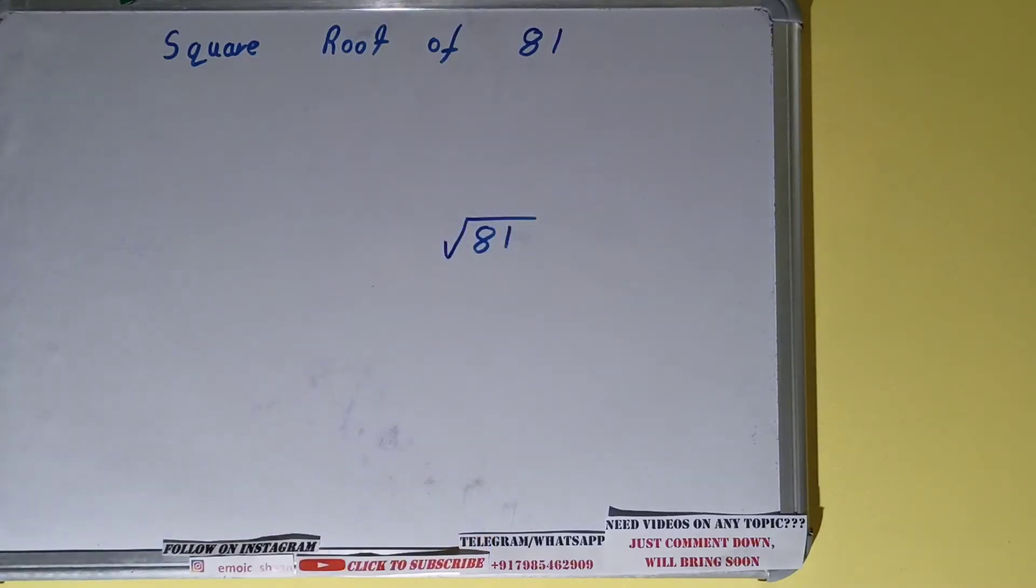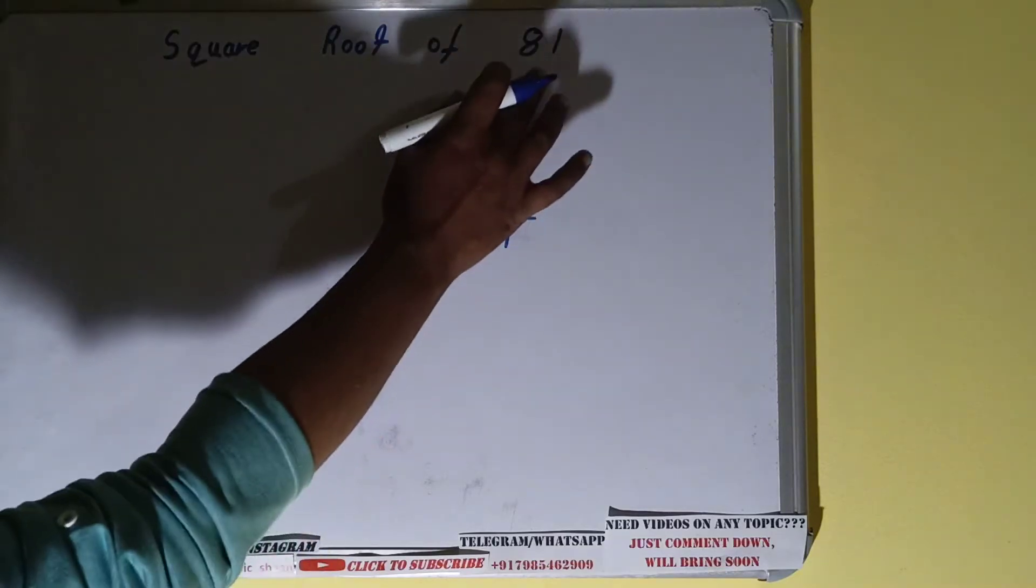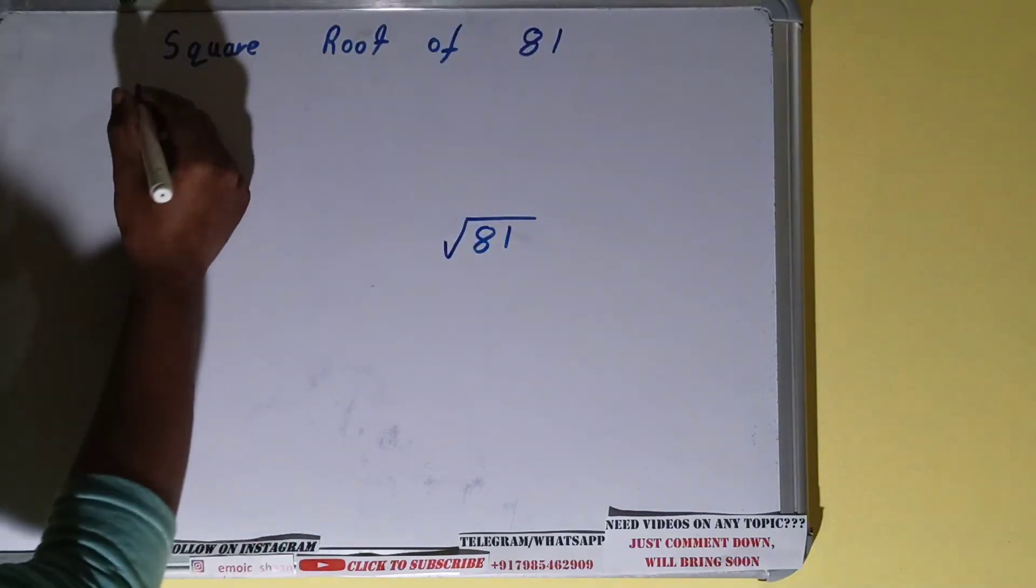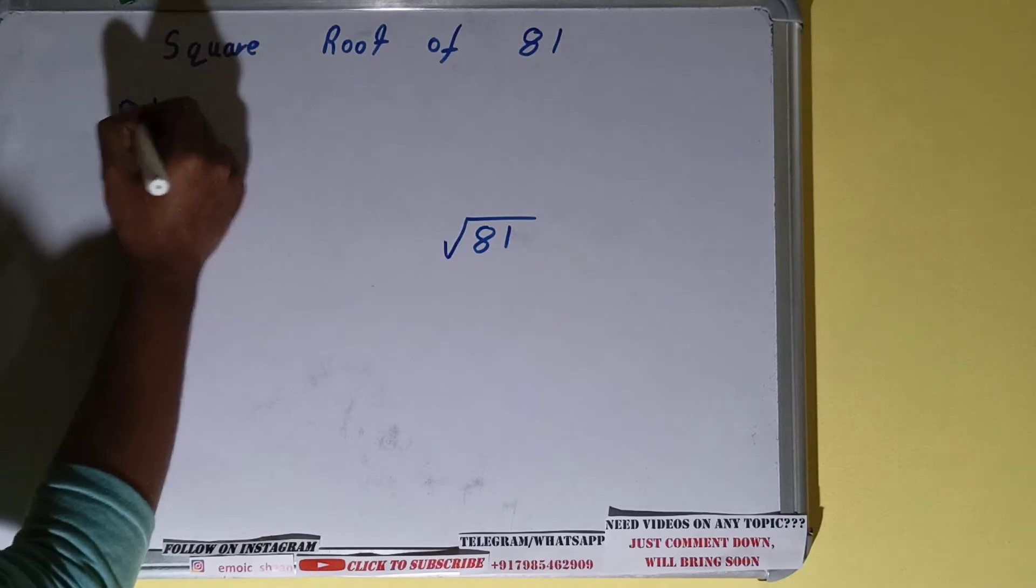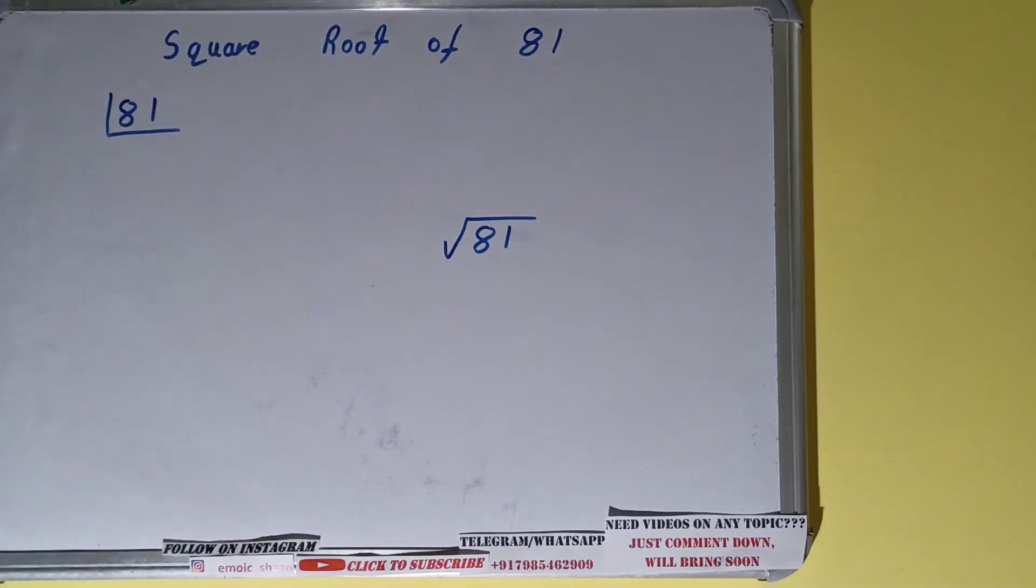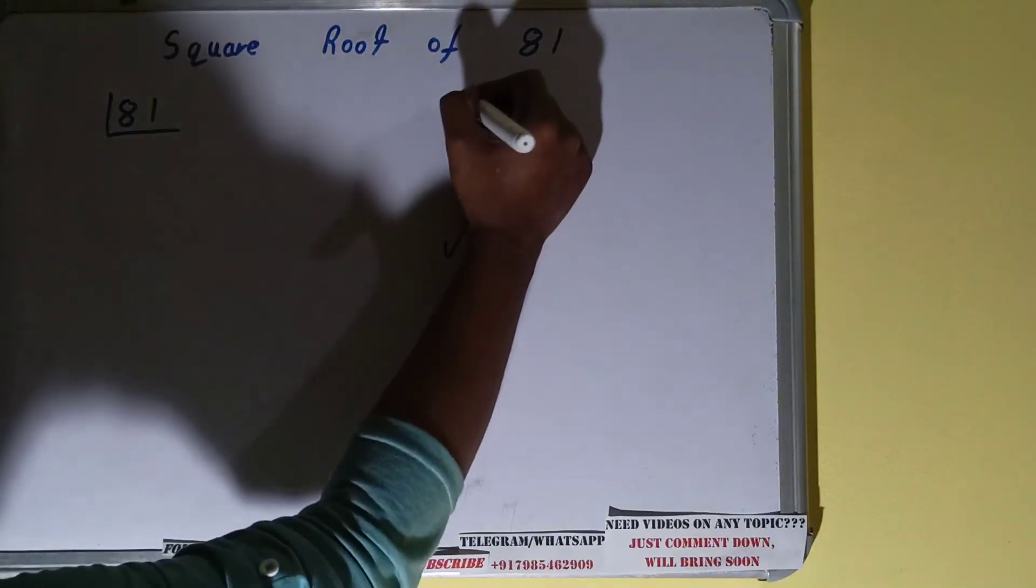Square root of 81. As I told you, we'll be using the prime factorization method, that means we need to do the prime factorization of the number. For doing the prime factorization, you should be knowing what are prime numbers. Prime numbers are numbers that are divisible by one and the number itself, like two, three, five, seven, and so on.